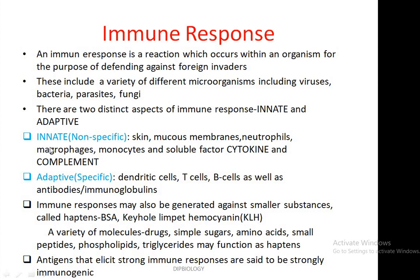The innate or non-specific immune response involves the skin, mucous membranes, neutrophils, macrophages, monocytes, and soluble factors like cytokines and complement factors. While in adaptive or specific immunity, responses are obtained from dendritic cells, T-cells, B-cells, as well as antibodies or immunoglobulins. Immune responses may also be generated against smaller substances or haptens which are coupled with carrier proteins like BSA, keyhole limpet hemocyanin.